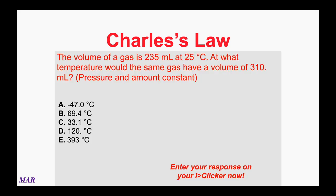Here's a question you might see: the volume of a gas is 235 milliliters at 25 degrees Celsius. At what temperature would the same gas have a volume of 310 milliliters? Assume pressure and the amount in moles are constant. This is a Charles's Law question. Charles's Law is V1/T1 = V2/T2. We're looking for a new temperature T2 — what temperature produces the new volume?